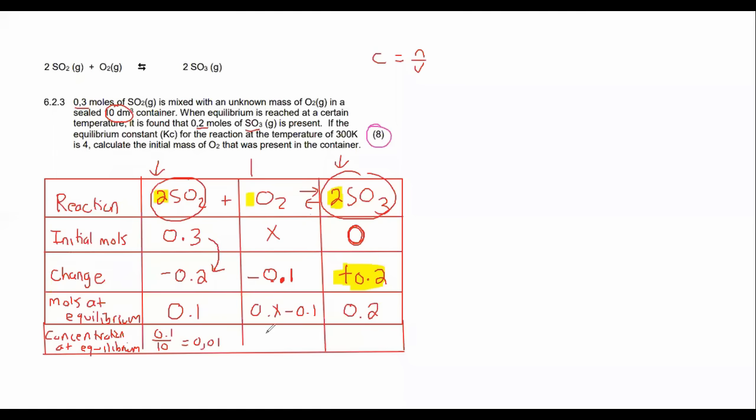So what I can now do is I can do some basic maths here. 0.3 - 0.2 is 0.1. This one I can say 0.x - 0.1, and then this one I can say the concentration, I can use the formula C = n/V where the volume they did tell us is 10 decimeters.